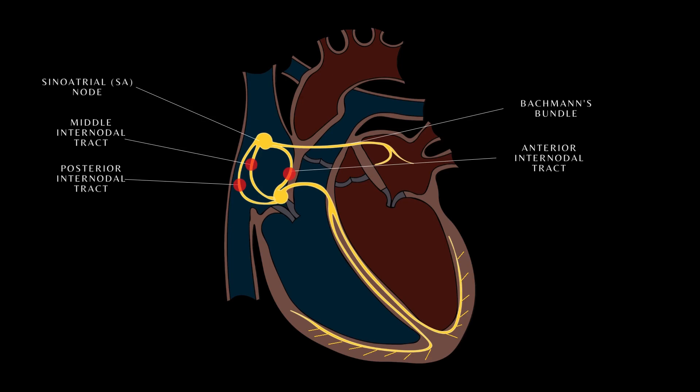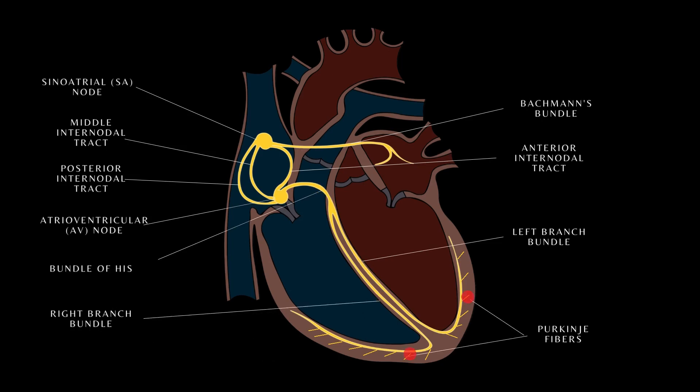The atrioventricular or AV node is located on the posteroinferior wall of the interatrial septum. The bundle of His, the left and right branch bundles, and the Purkinje fibers are dispersed at the base of the heart throughout the ventricular myocardium.